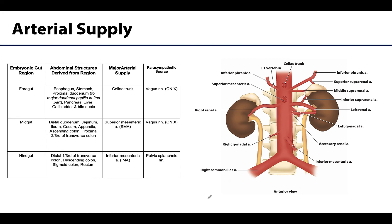If you remember which structures are derived from the foregut, you can correlate that with an arterial supply from a branch of the celiac trunk. In basic terms: foregut derivatives are supplied by branches of the celiac trunk, the first major anterior branch of the abdominal aorta. Midgut derivatives are supplied by branches of the SMA, or superior mesenteric artery. Hindgut derivatives are supplied by branches of the IMA, or inferior mesenteric artery. Note that the large intestine will have branches from both the SMA and the IMA.